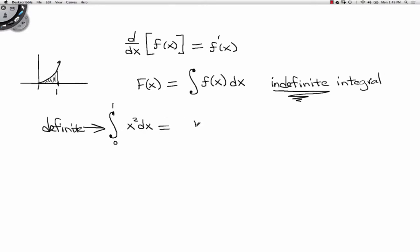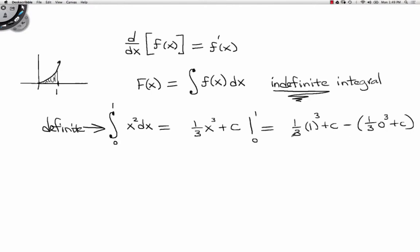If I anti-differentiate x squared, I get one-third x cubed plus C. But what I do next is use the endpoints of the interval, 0 and 1. So first I plug in 1: one-third times 1 cubed plus C, minus one-third times 0 cubed plus C. That's how you evaluate a definite integral — you take the upper value plugged into your expression, minus the lower value plugged into your expression. It's just going to give me one-third. The constant actually cancels out, so when doing a definite integral you don't need the constant. So one-third is the exact area under the parabola x squared from 0 to 1.